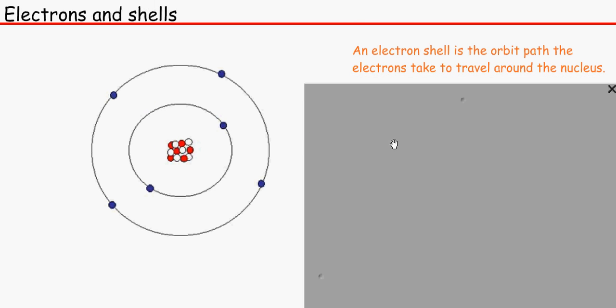And shells are the orbit path the electrons take to travel around the nucleus. Just like the Earth travels around the Sun, this is the pathway in which electrons go around the Sun, and so on and so forth.